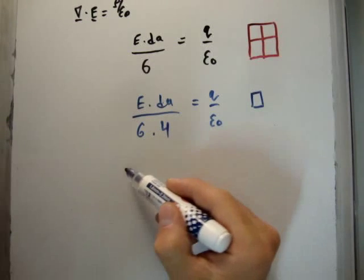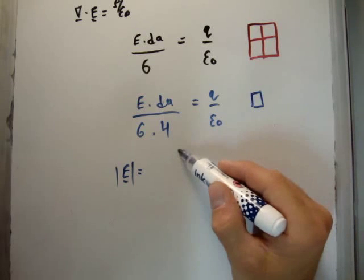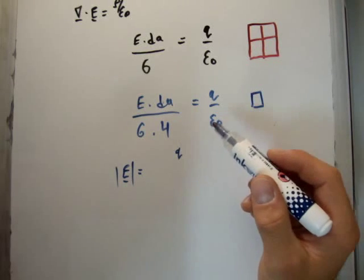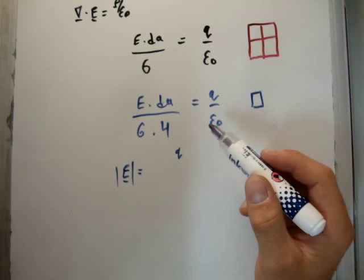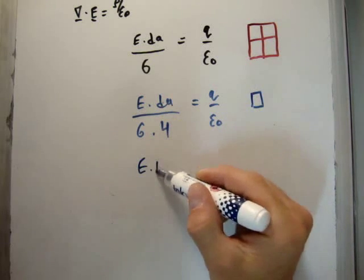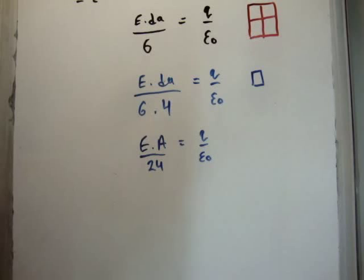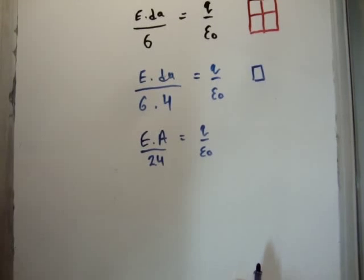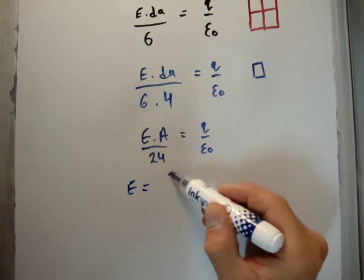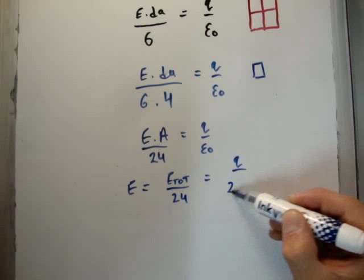Alright? So what you find is that the total field through any one of them, or we'll just say the magnitude of the electric field, through any face on the cube, is going to be q, E over 24, sorry, E times A over 24. So one second now, just bear with me. Sorry, we have E times A over 24, of course, is equal to q over epsilon zero. Okay? So that's through any particular wall. Or we could write it in another way, that the field is equal to E total divided by 24, which is equal to q over 24 epsilon zero. Okay? That's another way of writing it.